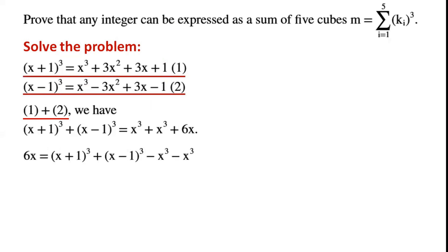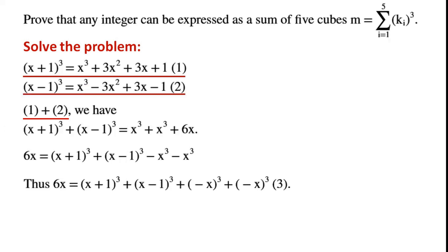By rearranging the identity, we have 6x equals (x+1) cubed plus (x-1) cubed minus x cubed minus x cubed. Thus, 6x equals (x+1) cubed plus (x-1) cubed plus (-x) cubed.